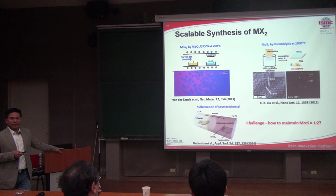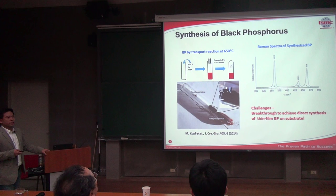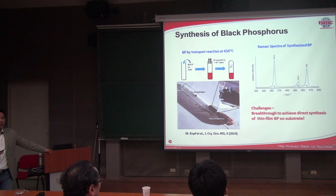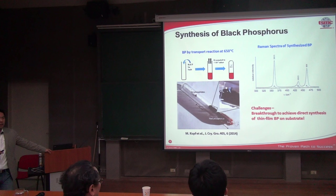Black phosphorus is a more recent addition to this zoo of 2D materials, and has a relatively short history. Still, there are no known methods to grow black phosphorus on substrate directly. So all the black phosphorus devices that have been studied so far...